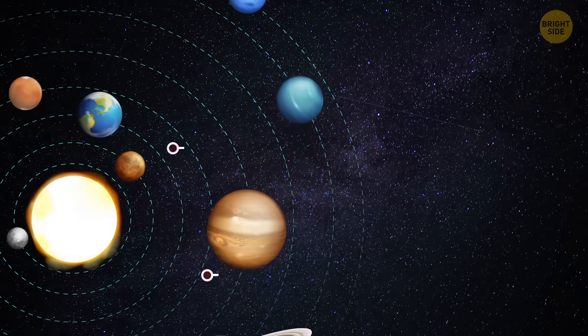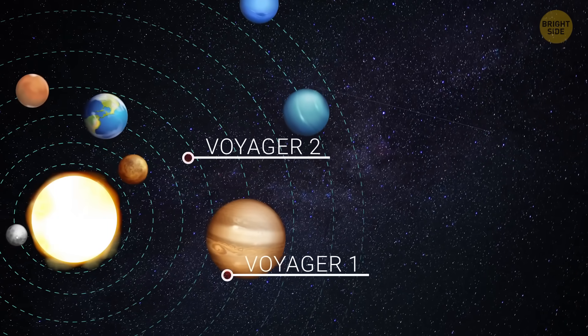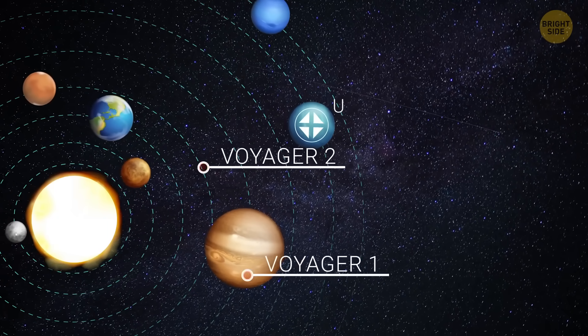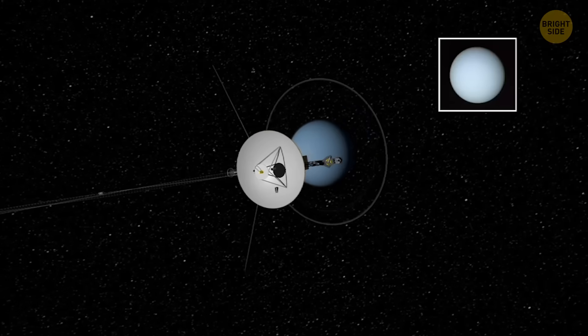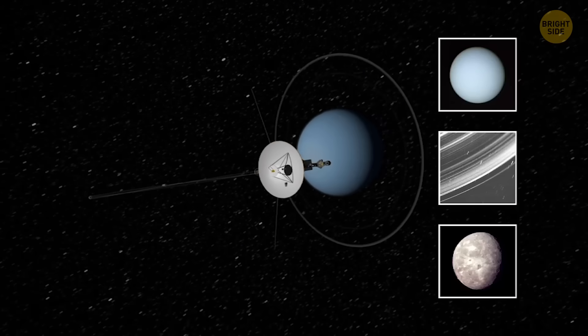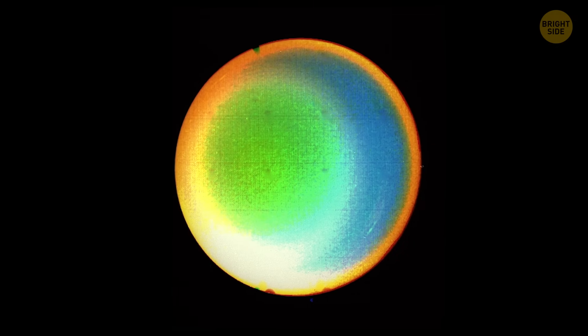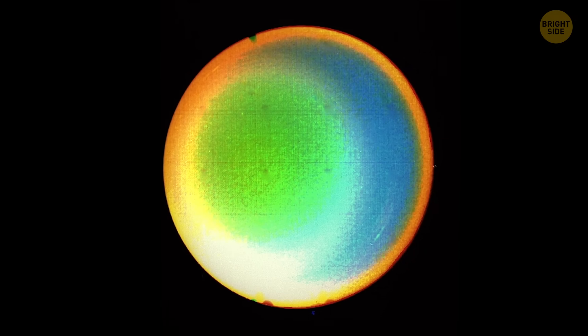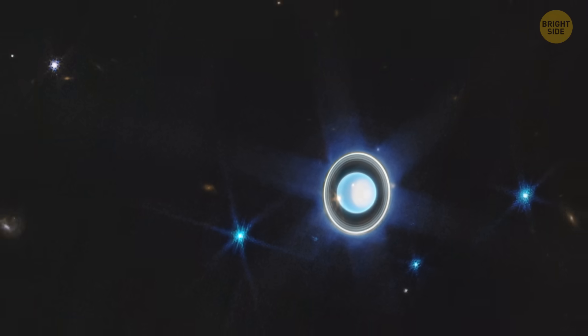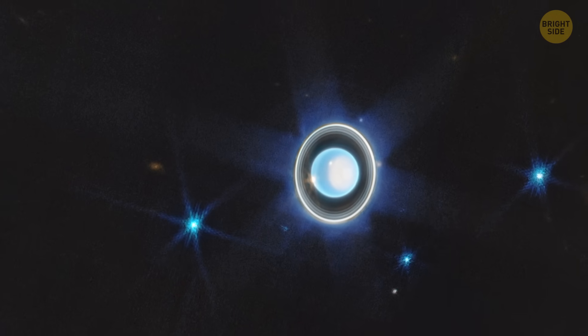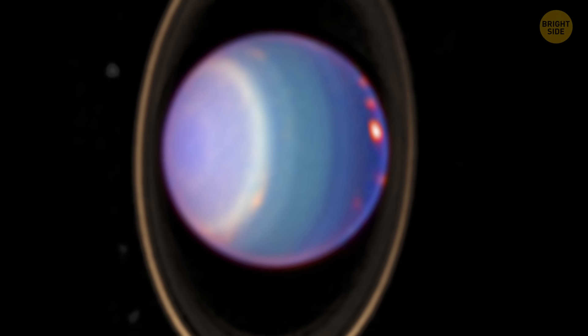After Saturn, Voyager 1 continued out of the solar system, while Voyager 2 headed toward Uranus. Voyager 2 discovered 11 new moons and 2 new rings there. It also observed strange features, such as Uranus' unusual magnetic field and a surprisingly small temperature difference between its equator and poles.